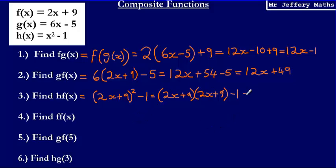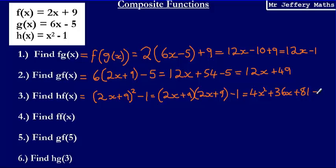Expanding this, we get 4x squared plus 18x plus another 18x, so plus 36x, and then 9 times 9 which is 81, so plus 81, and then subtract the 1. Our final answer here is 4x squared plus 36x plus 80.